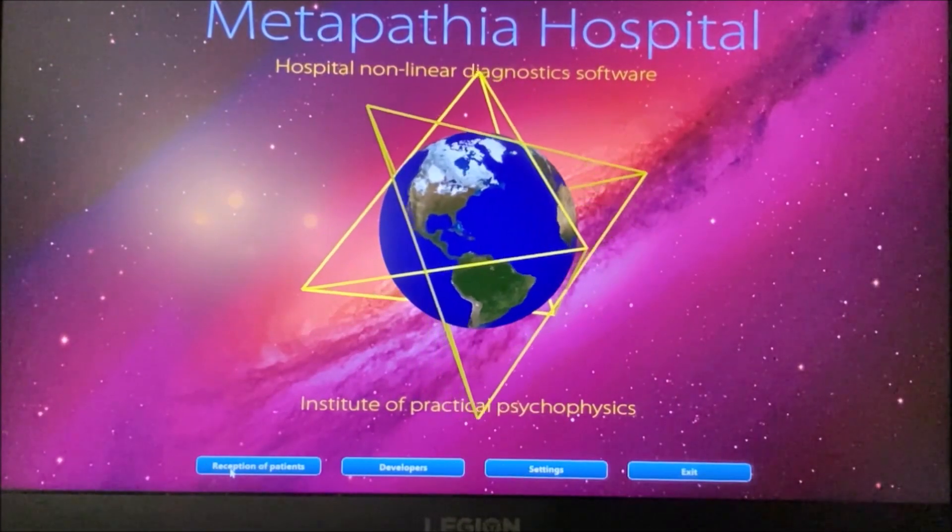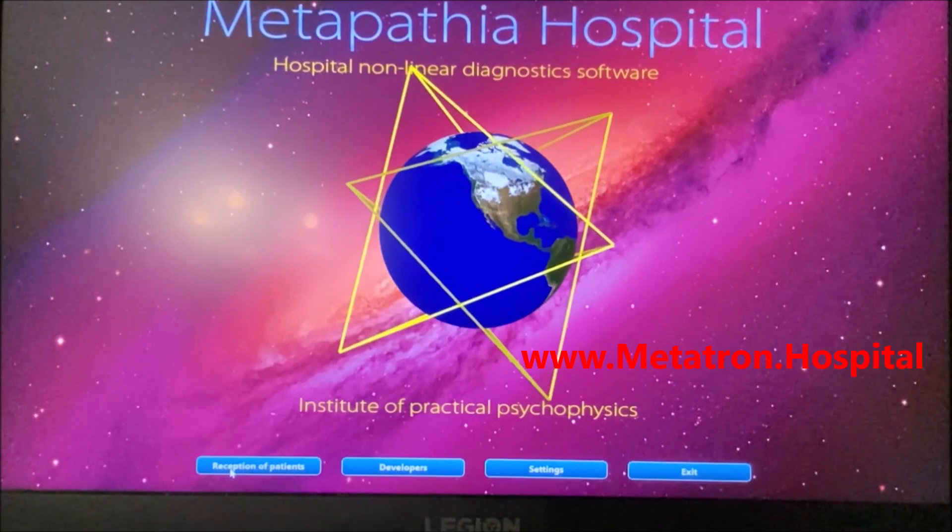Required information that determines your Quantum ID are name, gender, date of birth, blood type, address, and phone.